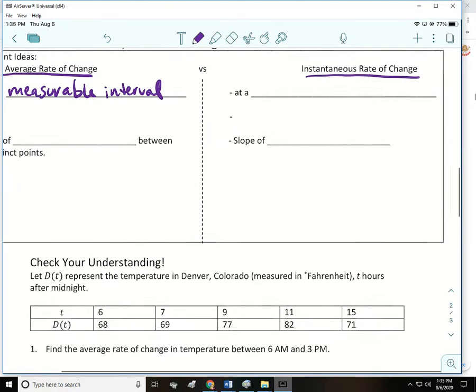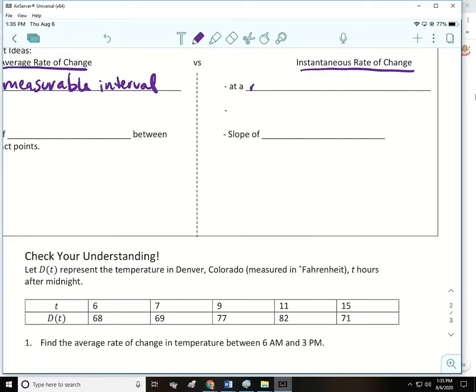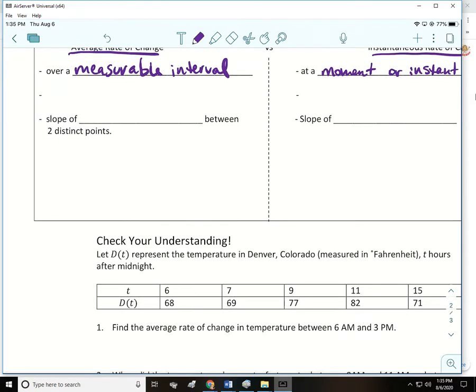The instantaneous rate of change is at a moment or instant in time. So real quick down here at the bottom of the box, I'm going to draw a little function, kind of wobbly. I'm going to have an x1 and an x2, go up to the function and put a point, and we're going to connect those points.